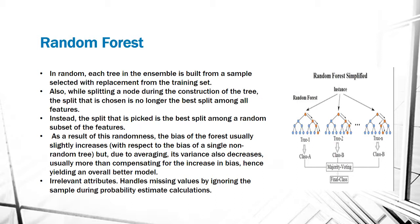In random forest, each tree in the ensemble is built from a sample selected with replacement from the training set. Also, while splitting a node during the construction of the tree, the split that is chosen is no longer the best split among all features. Instead, the split that is picked is the best split among a random subset of the features. As a result of the randomness, the bias of the forest usually slightly increases, but due to averaging, its variance also decreases, usually more than compensating for the increase in bias, hence yielding an overall better model.